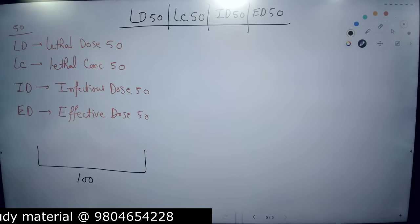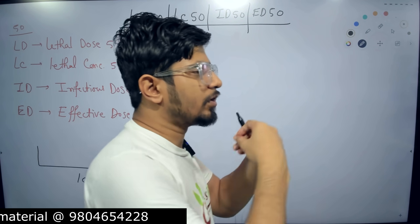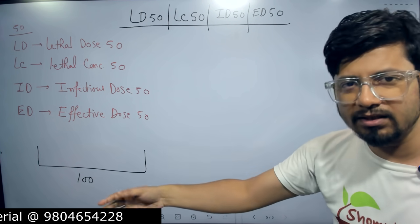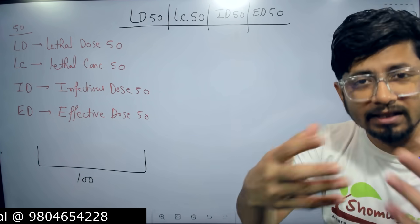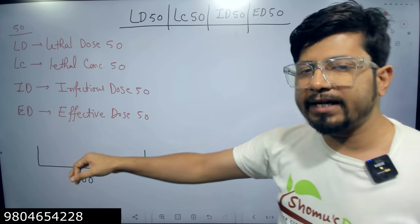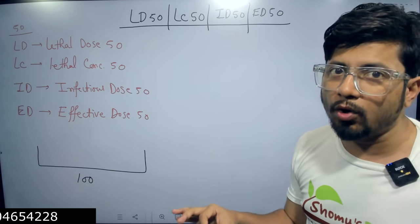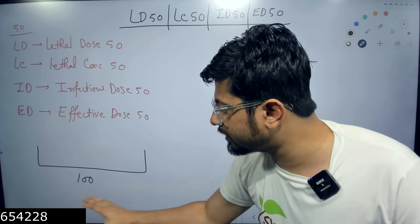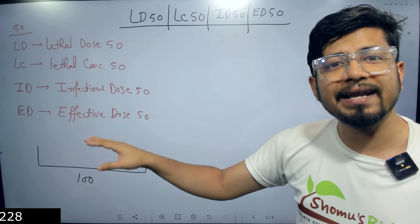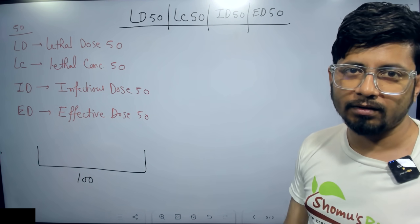Among these 100 individuals, you are administering some sort of chemical, or giving them a medical drug, or giving them some sort of microorganism as a vaccine or in a single cell protein. You are providing them with some drug, chemical, or microorganism, and you want to know among these 100 how many individuals remain alive and how many are getting killed.